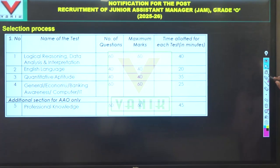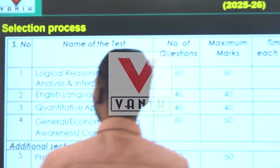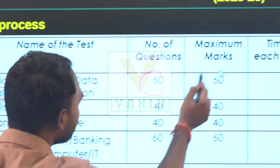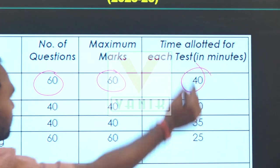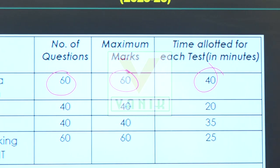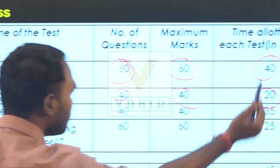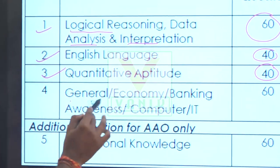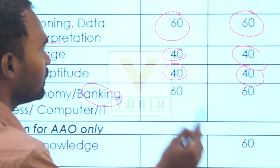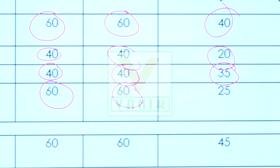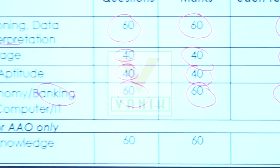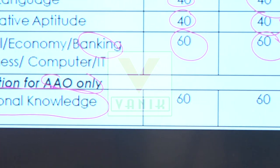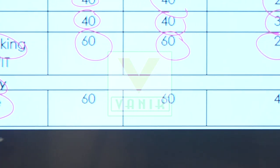Regarding the selection process: the online test includes Logical Reasoning and Data Analysis with 60 questions for 60 marks in 40 minutes; English Language with 40 questions for 40 marks in 20 minutes; Quantitative Aptitude with 40 questions for 40 marks in 35 minutes; and General Awareness including current affairs and banking awareness with 60 questions for 60 marks in 25 minutes. For the specialist post, there is an additional Professional Knowledge section based on your degree specialization, such as BSc Agriculture or BTech Agriculture.